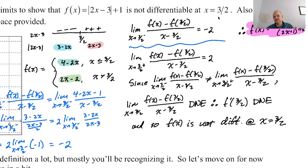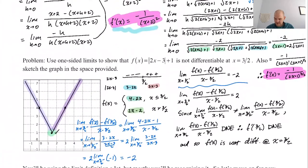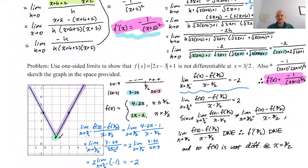Since the limit from the left doesn't equal the limit from the right, the limit doesn't exist, which means the derivative doesn't exist, which means the function is not differentiable. Get used to it — it's a lot of writing. I'm going to cut this here and come back in the next video. See you then.